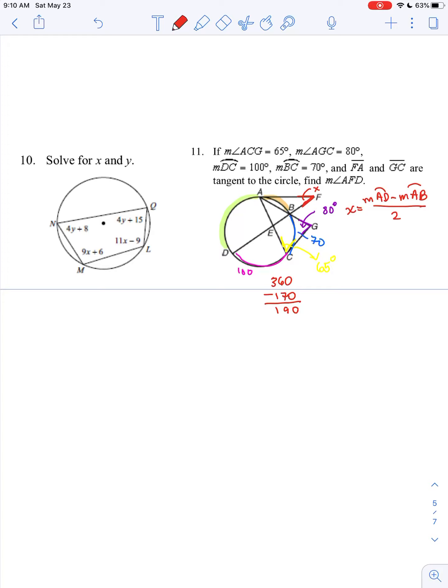We have that the measure of angle AGC is equal to arc ADC minus arc BC divided by 2. We're given angle AGC is 80 degrees, we have arc ADC is X plus 100, and then we're subtracting out arc BC, which is 70, and then dividing by 2. If I keep solving this, I get 160 equals X plus 30, and then 130 equals X.